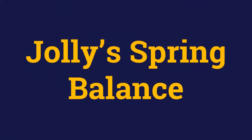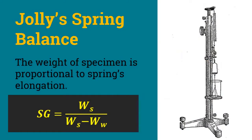Another instrument is Jolly's spring balance, used to measure the specific gravity of small specimens. The formula is the same, but the measuring technique is different. This instrument uses Hooke's law, by which extension in the spring is proportional to the weight. The spring balance scale may be in grams or centimeters, but both suffice since we only need a ratio.